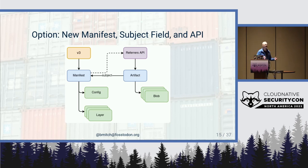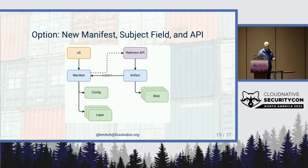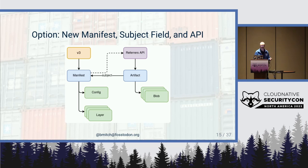A couple of pros and cons: it was nice and efficient with the API, but none of this works on an existing registry today. Any registry that doesn't recognize the artifact manifest will reject it. While registries accept any blob, when you push a manifest they parse it for garbage collection, association cleanup, and validation. If they don't recognize it, they just reject it.